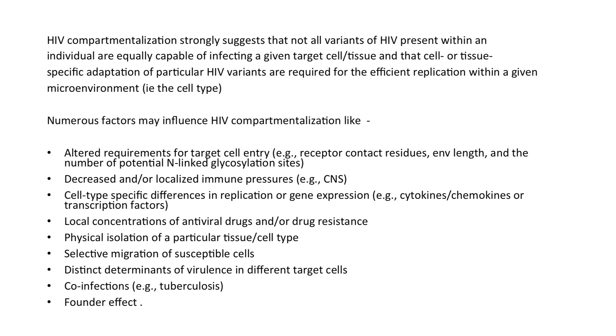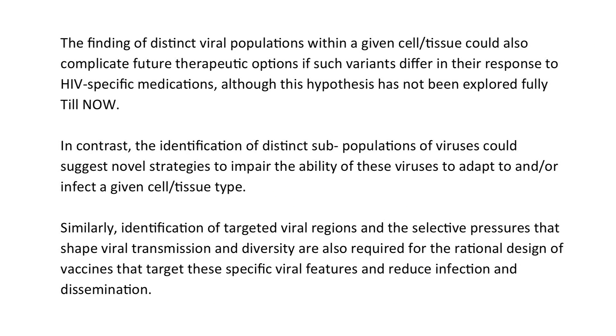Numerous factors may influence HIV compartmentalization. Some of them are: altered requirements for target cell entry such as receptor contact residues, envelope length, and the number of potential N-linked glycosylation sites; decreased or localized immune selective pressures as in the CNS; cell-type-specific differences in replication or gene expression as in cytokine, chemokine, or transcription factors; local concentration of antiviral drugs or drug resistance; physical isolation of a particular tissue or cell type; selective migration of susceptible cells; distinct determinants of virulence in different target cells; co-infections such as tuberculosis; and the founder effect — the loss of genetic variation occurring when a new population is established by a very small number of individuals from a larger population. The finding of distinct viral populations within a given cell or tissue could also complicate future therapeutic options if such variants differ in their response to HIV-specific medications, although this hypothesis has not been fully explored.